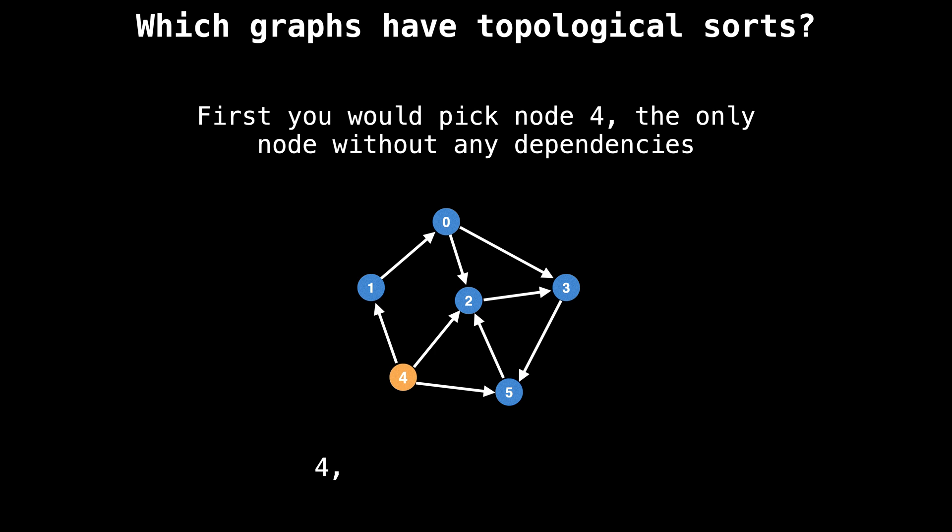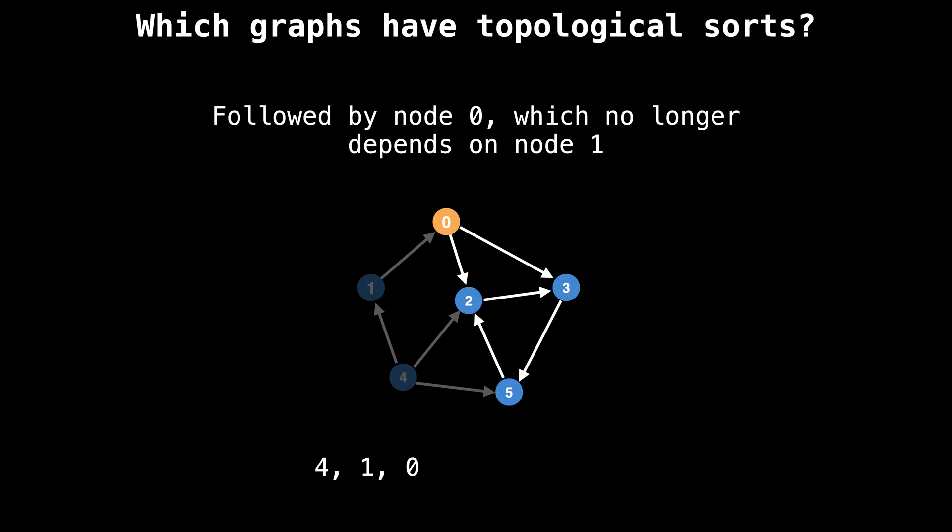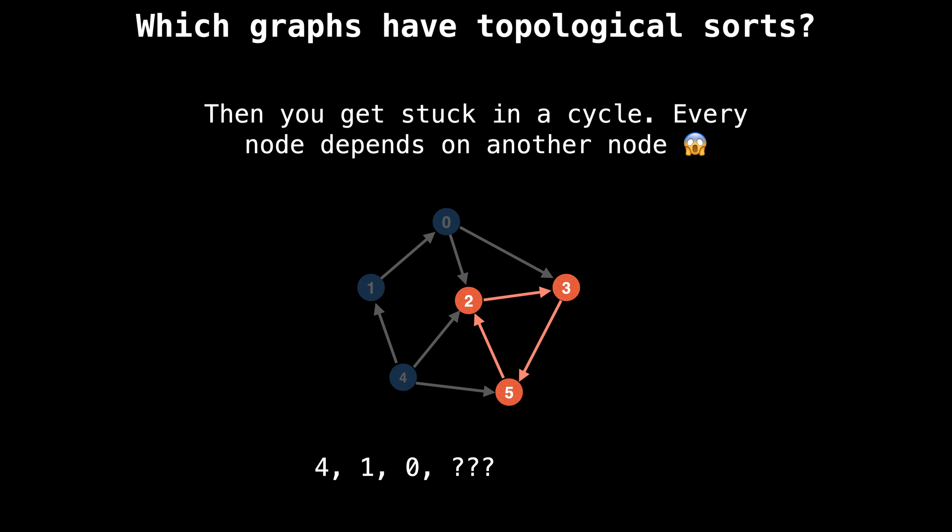First, we would pick node four because node four is the only node without any dependencies. Then you could process node one, which no longer depends on node four, followed by node zero, which no longer depends on node one. Then you would get stuck in a cycle because every node depends on another node. So you could try and process node two, but before you can do that, you need to process node five. But to process node five, you need to process node three, and node three depends on node two, where we started. So the problem has no solution, and that's why we ban cycles.